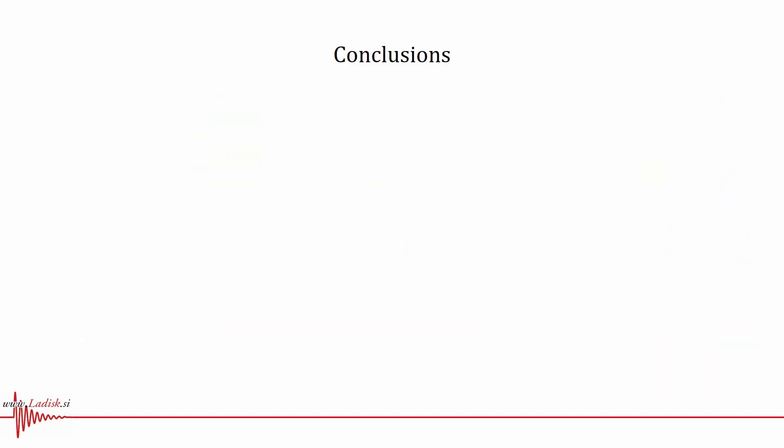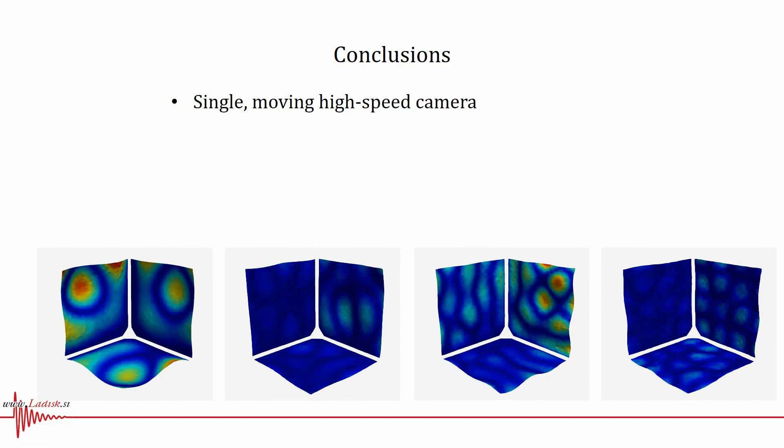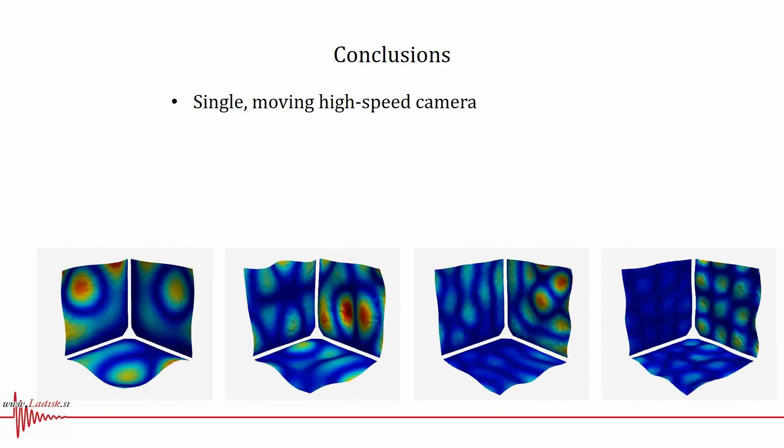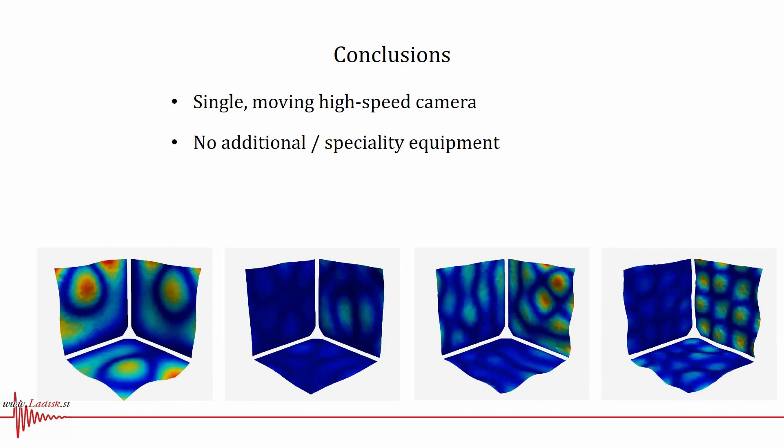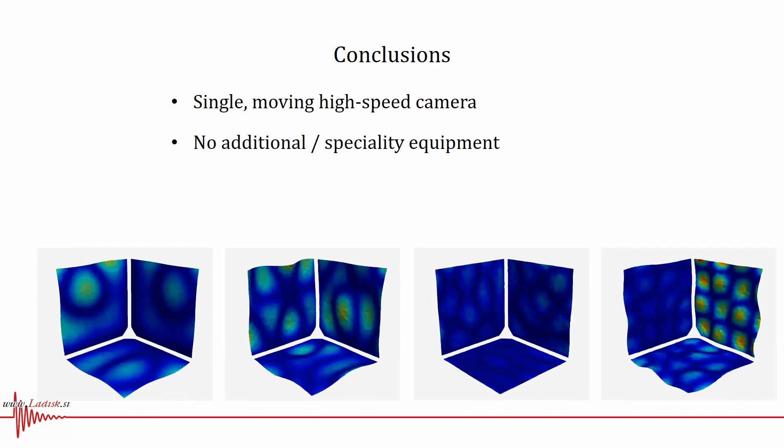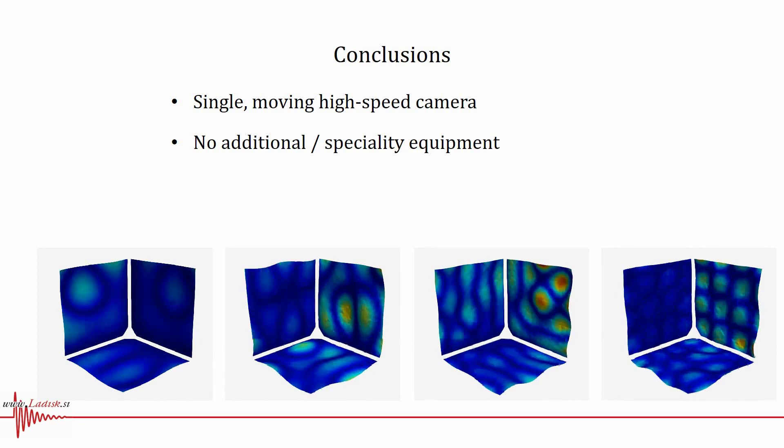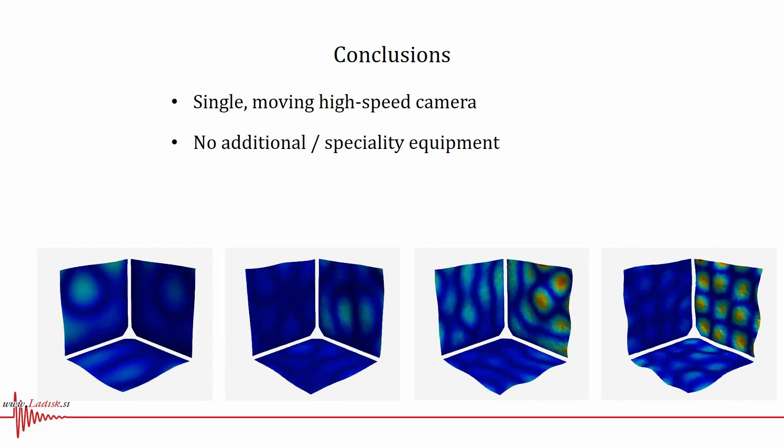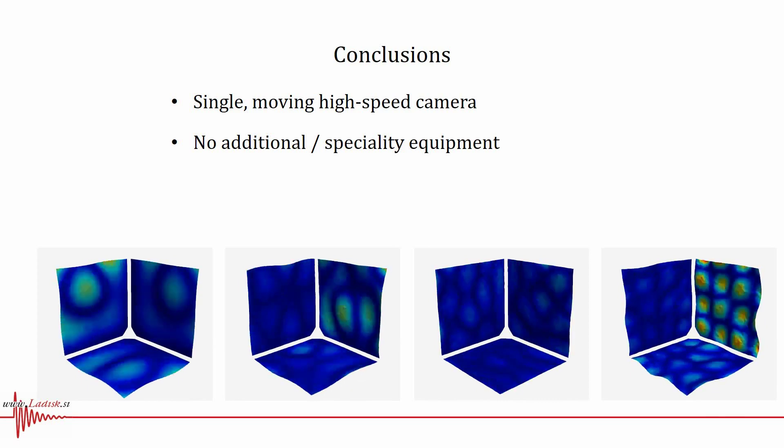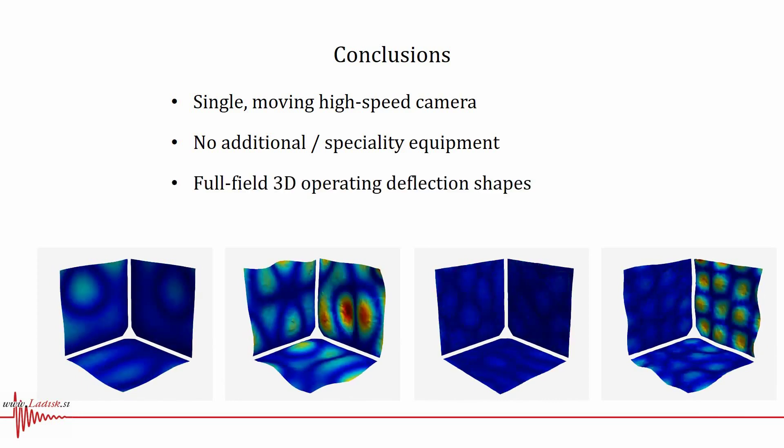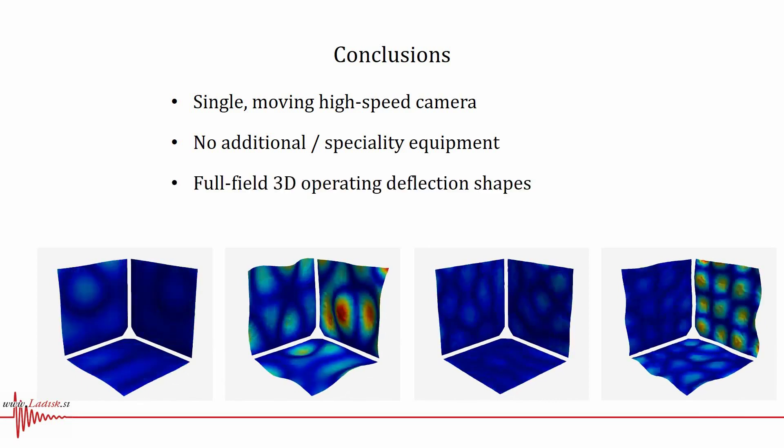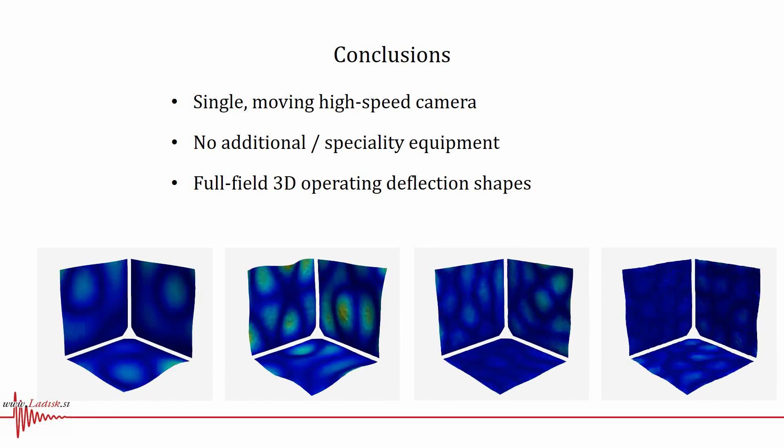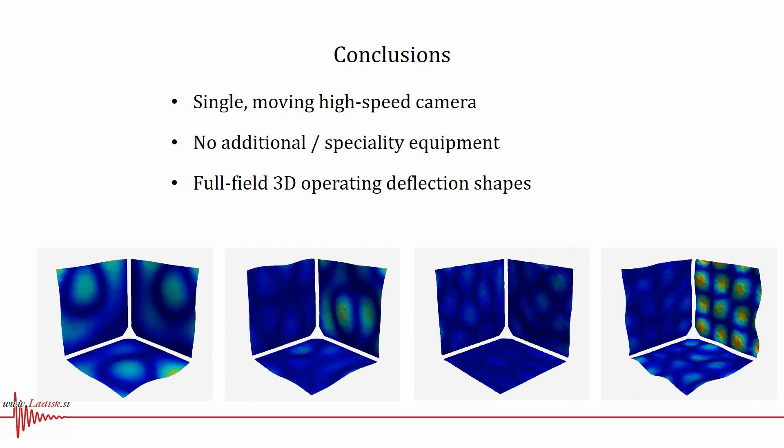To conclude, an image-based method of 3D operating deflection shape measurement using a single moving high-speed camera is presented. Compared to existing image-based 3D vibration measurement methods, only a single high-speed camera with no additional equipment is required. Moving the camera to arbitrary locations, the measurement field of view can be extended for objects with complex geometry, and the method produces full-field 3D operating deflection shapes.